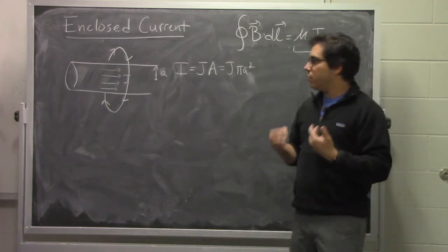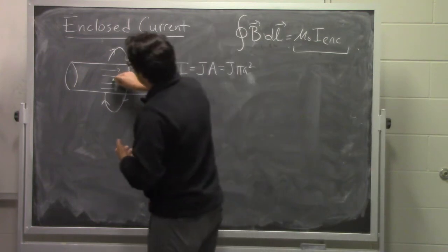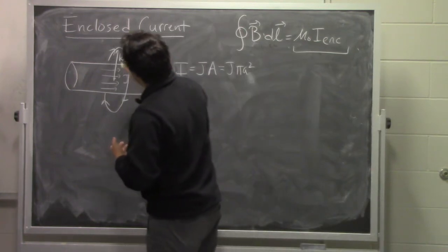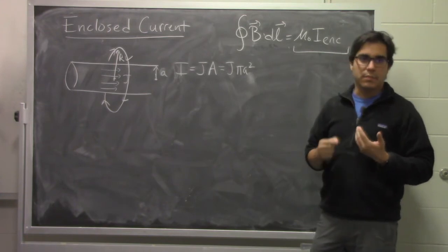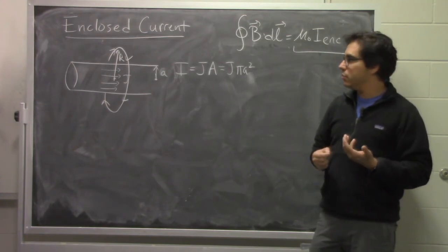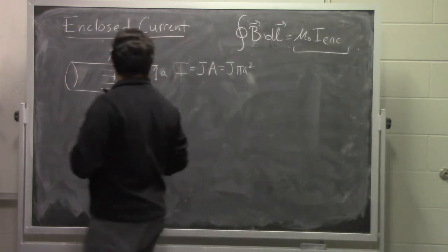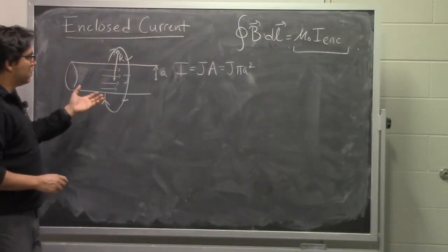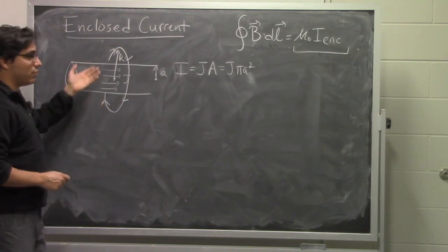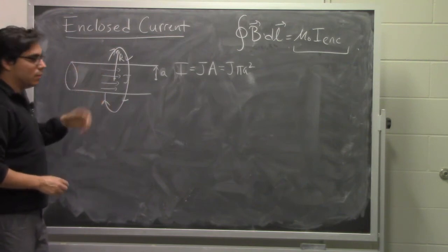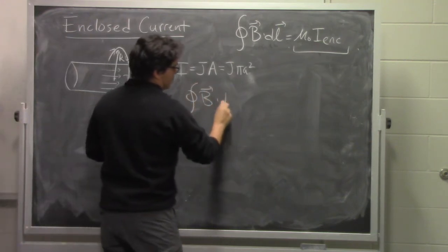Now, in the previous video, we went through the whole argument about why an Amperian loop that is of radius r produces a result, which is basically the magnetic field magnitude times the perimeter of the loop. And that is exactly the situation we're in here. Just as before.